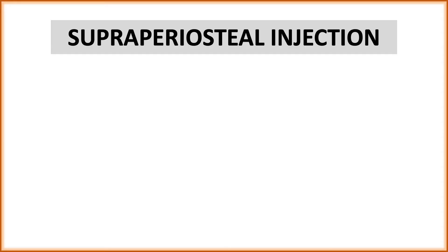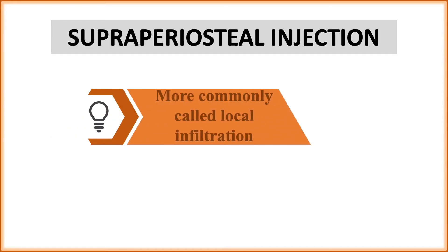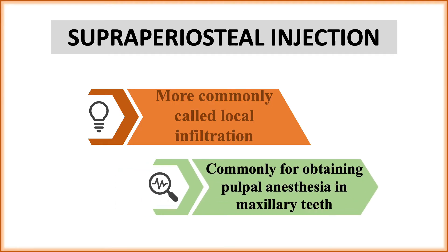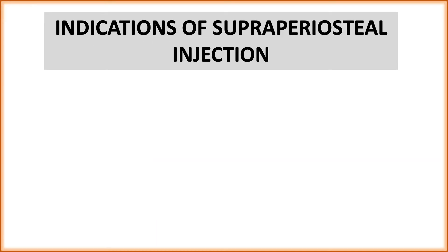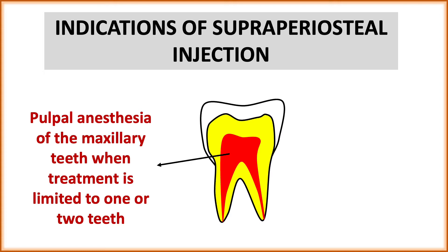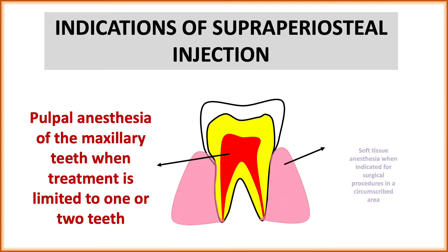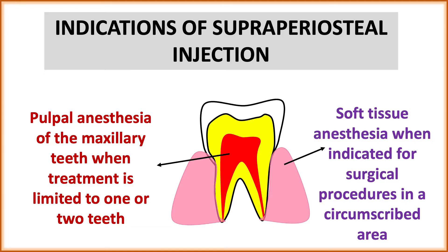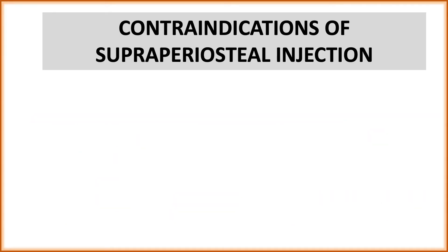We'll now discuss in detail the supraperiosteal or local infiltration technique — the most common technique of infiltration used today. It is also called the periosteal injection technique, and is commonly used for obtaining pulpal anesthesia in maxillary teeth. Indications include: pulpal anesthesia of maxillary teeth when treatment is limited to one or two teeth — in such cases supraperiosteal injection is sufficient — and soft tissue anesthesia when indicated for a surgical procedure in a circumscribed area.